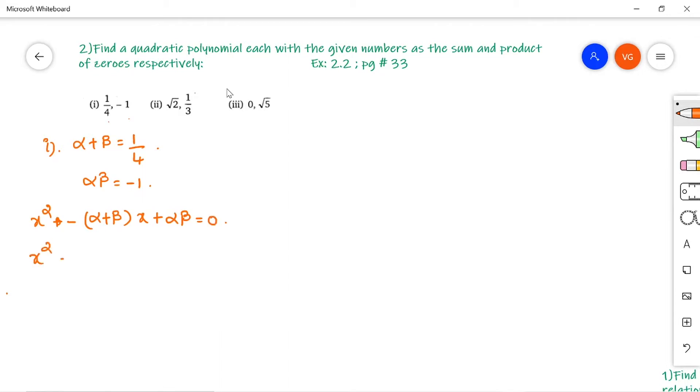Just directly substitute: x² - (1/4)x - 1 = 0. Taking the LCM, 4x² - x - 1 = 0 is the required quadratic polynomial.